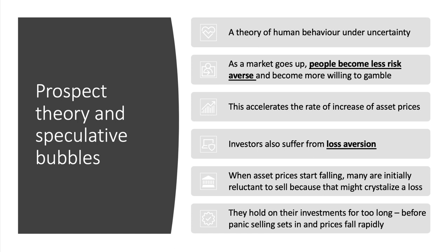Another aspect of behavioral economics and speculative bubbles comes from the work of Daniel Kahneman and Amos Tversky — two psychologists who won the Nobel Prize in economics — and this links to something called prospect theory. This is a theory of human behavior under conditions of uncertainty and risk. According to Kahneman, when the financial market is going up — when share prices or house prices are rising strongly — people tend to become less risk averse and more willing to gamble with their own money, and that behavior, if it's herd-like, accelerates the rate of increase of asset prices as demand goes up.